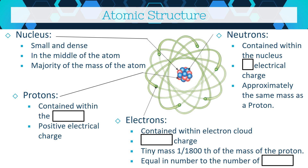In the center we have our protons and neutrons — this is what we call the nucleus. It's quite small and very dense, and most of the mass of the atom comes from this part. Protons are in the nucleus and have a positive electrical charge — easy to remember because protons are positively charged. Neutrons are also in the nucleus but don't have any electrical charge — neutrons are neutral.